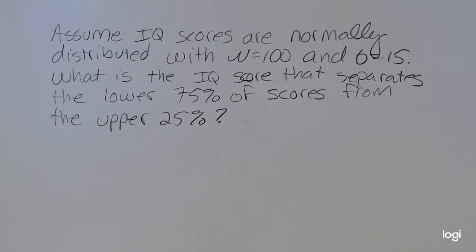For this example, let's assume that IQ scores are normally distributed with a mean of 100 and a standard deviation of 15. What is the IQ score that separates the lower 75% of scores from the upper 25%?